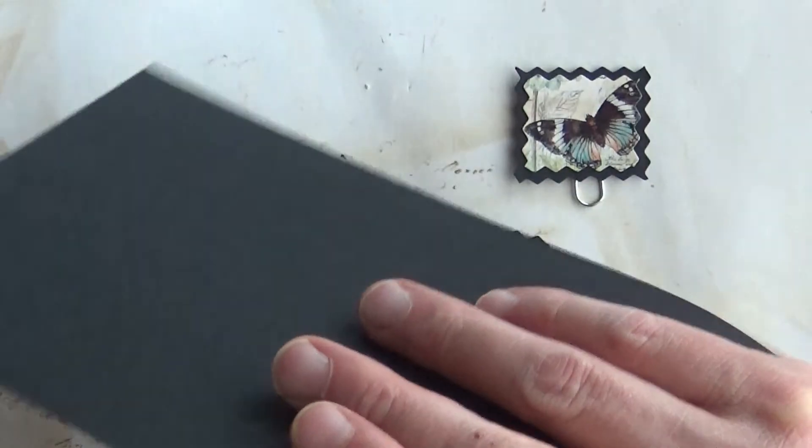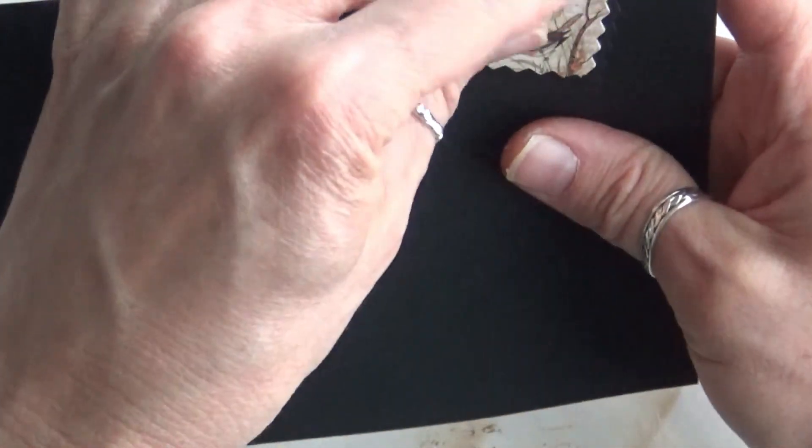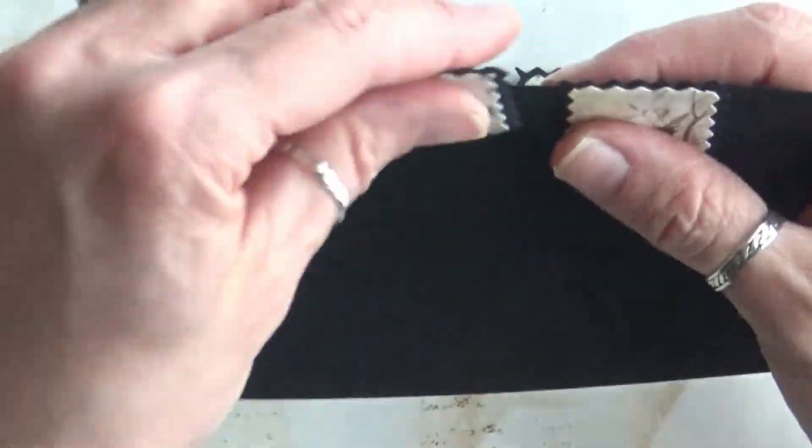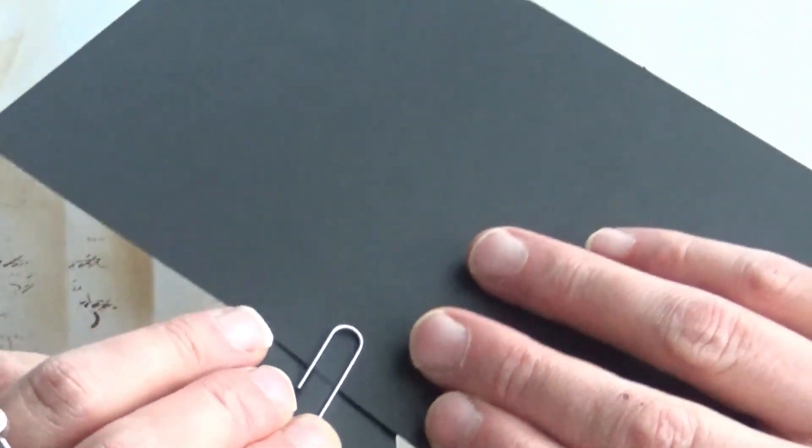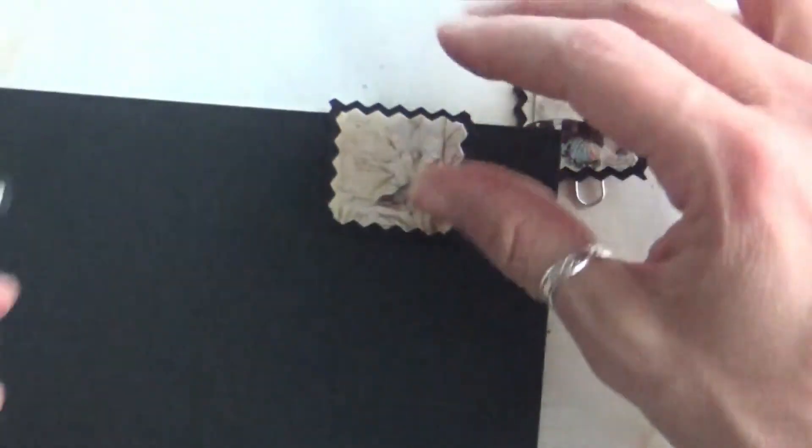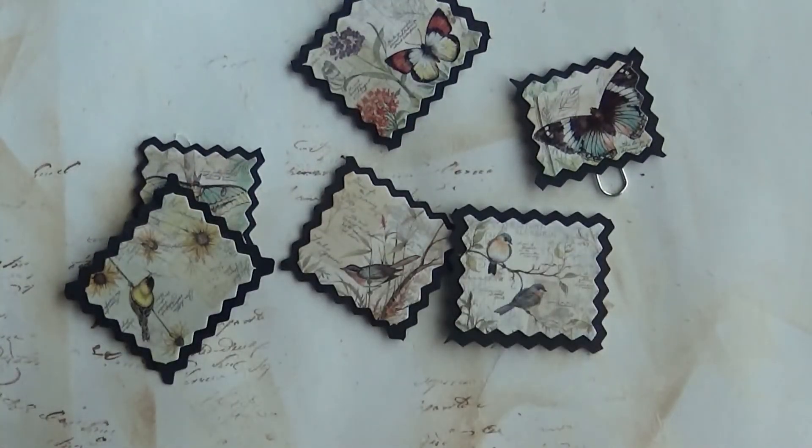But when she was done, she just clipped them all to - I think a little index card, I can't remember - but she clipped them all to keep them organized like so. I don't know that I'll do that - I store things in little Tupperware, so I'll probably just toss mine in there.